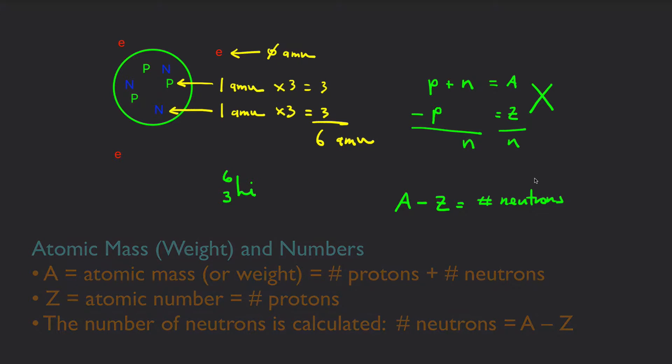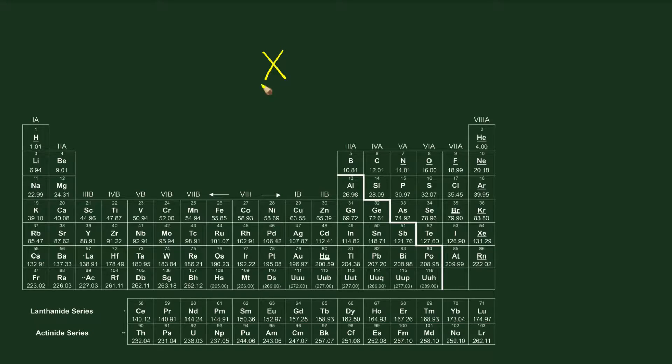So, let's just practice with one simple problem. Given that an element has an atomic number of 6 and an atomic mass of 13, how many neutrons does it have? And what is the element? First, let's consider how many neutrons. It's just the atomic weight minus the atomic number: 13 minus 6 equals 7. This material has 7 neutrons.